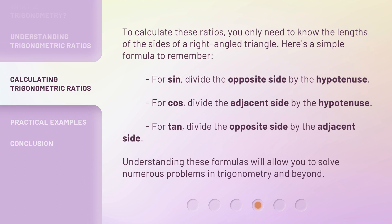To calculate these ratios, you only need to know the lengths of the sides of a right-angled triangle. Here's a simple formula to remember: For sin, divide the opposite side by the hypotenuse.